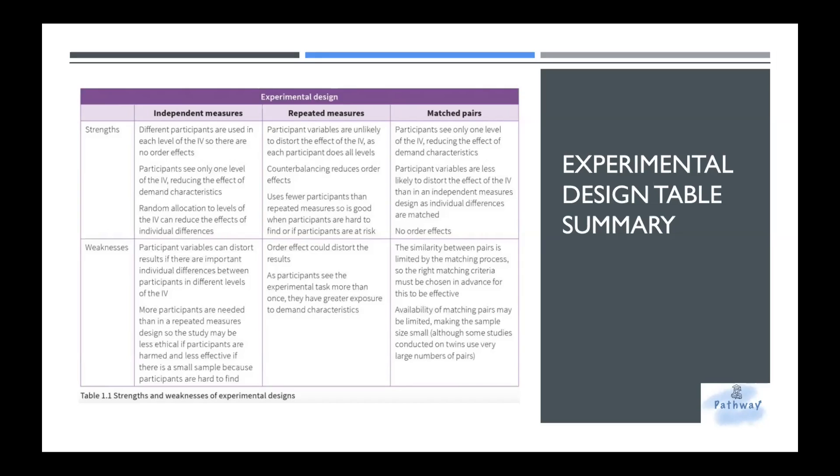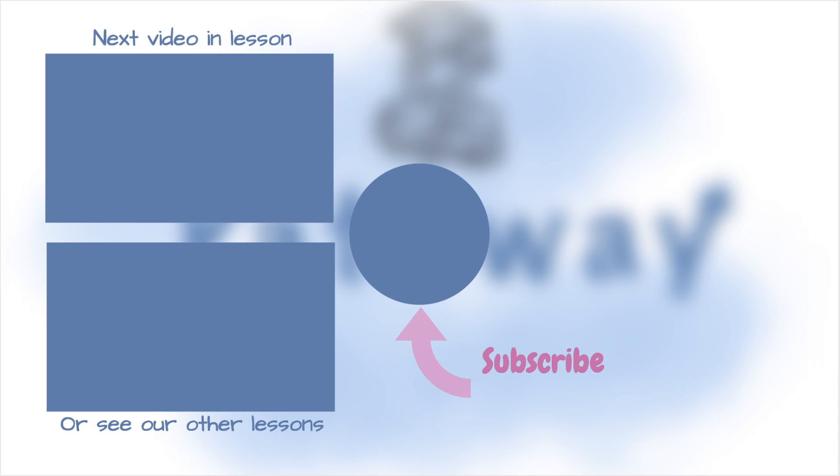With the matched pairs, they see only one level reducing the demand characteristics. There's no order effects since you only pair up people. Participant variables are less likely to distort. However, the similarity between pairs is limited by the matching process. The availability of the matching pairs could be limited as well. Normally, they do this with a small sample size. So it depends on what you're trying to study or experiment.